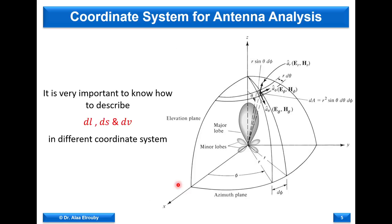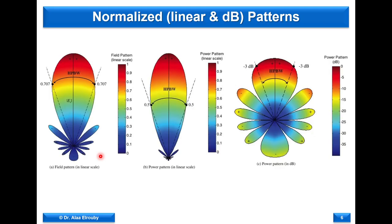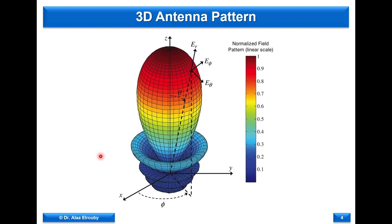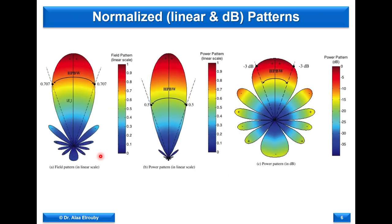In order to deal with the radiation pattern, you need to be skillful, fast, accurate, and knowledgeable in dealing with coordinate systems. The three coordinate systems we usually deal with are Cartesian, cylindrical, and spherical, and moving from one to the other is needed for all electromagnetic courses. Since 3D looks attractive but 2D is more useful, we use cross-section cuts at certain angles from the 3D and present them in 2D.